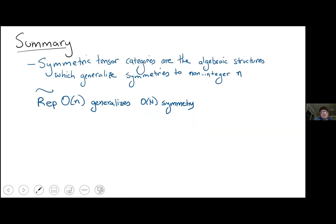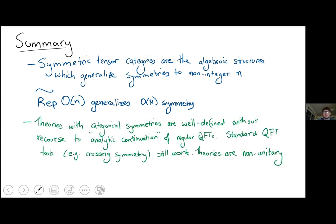To summarize: symmetric tensor categories are the correct algebraic structure for generalizing symmetries to non-integer N. The Deligne category Rep̃(O(N)) precisely generalizes orthogonal group symmetry to this case. Theories with categorical symmetries can be well-defined at the level of local operators and correlation functions — without recourse to analytic continuation — and standard QFT tools like crossing equations apply. However, these theories are necessarily non-unitary.